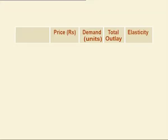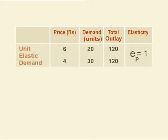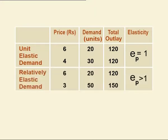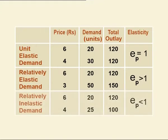Total Outlay Method: in this method, to find out whether demand is elastic or not, the total outlay or total expenditure of the consumer is considered. Total outlay equals price multiplied by quantity purchased or sold. Unit elastic demand: when total outlay remains constant irrespective of the change in price. Relatively elastic demand: with the rise in price, if total outlay falls and vice versa, then it is relatively elastic demand. Relatively inelastic demand: with the rise in price, total outlay rises, and with the fall in price, total outlay falls. The table given in the visual clarifies the total outlay method.